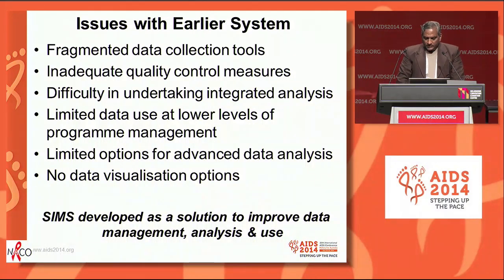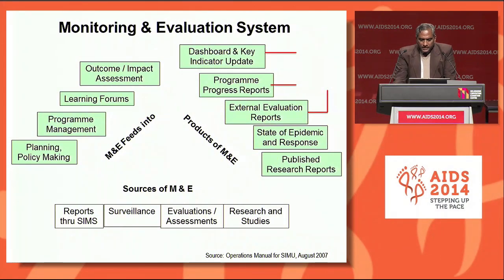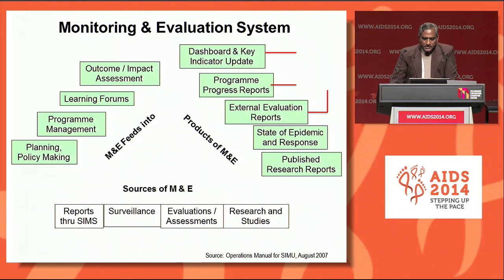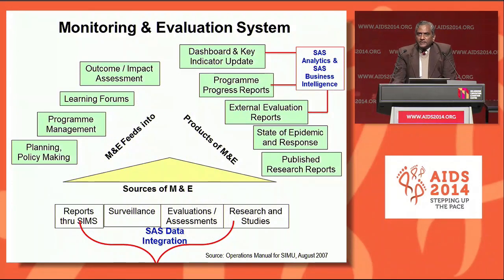This was planned as a solution to improve data management, analysis, and use. At the bottom, you'll see the various sources of data — the information system, the surveillance, evaluation assessment, research and studies — which feeds into policy making, program management, learning forums, and for making impact assessment. The products of the M&E system could be through reports, through development of a state of the epidemic, and publications, and these are all integrated using a SaaS platform.